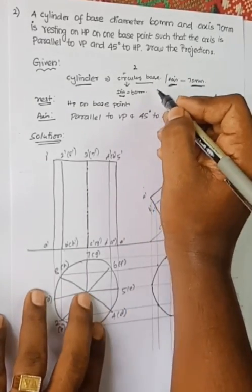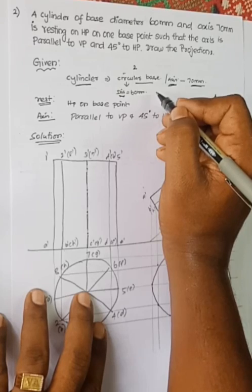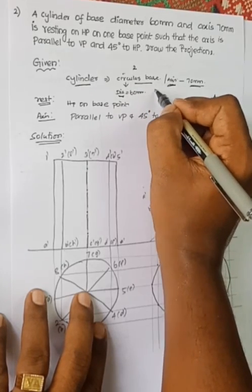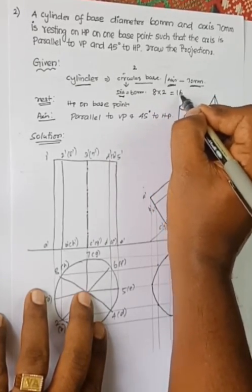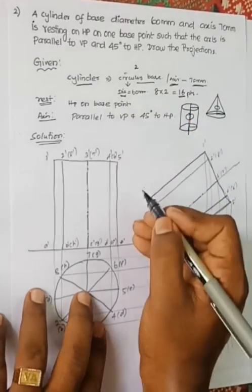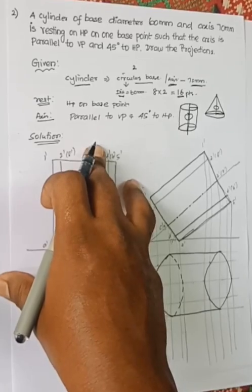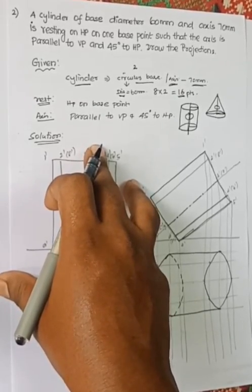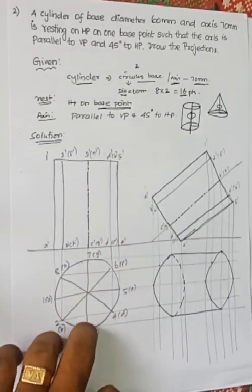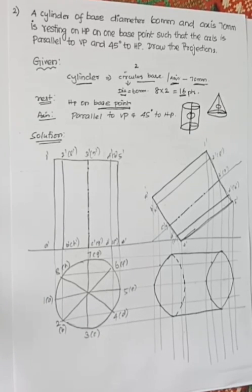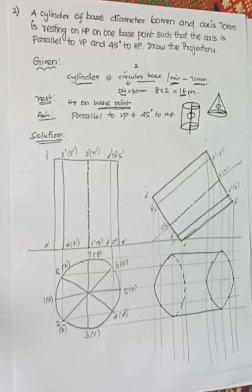As in previous problems, we predict the number of points. We divide the circle into eight equal parts. There are two circles in the cylinder, so 8 × 2 = 16 points total. The resting condition is that the solid rests on HP not on the whole base, but on one base point — one point on the circumference of the base rests on HP while the rest is floating in the air.